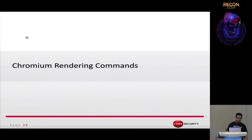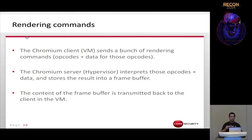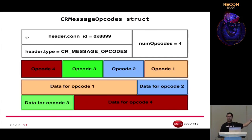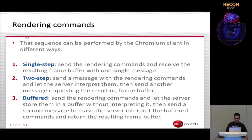When a Chromium client converts OpenGL function calls to rendering commands or bytecode, they are sent to the Chromium server, which processes the bytecode and stores results in a framebuffer that is transmitted back to the guest. The CR message opcode structure used to send rendering commands has a type field, a field specifying the number of opcodes, the opcodes in reverse order, and finally the data for each opcode, which can have a different length.